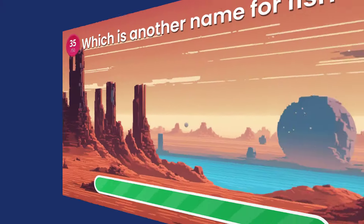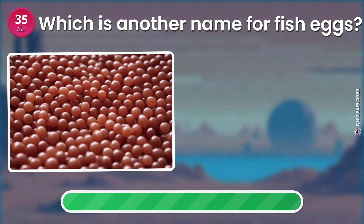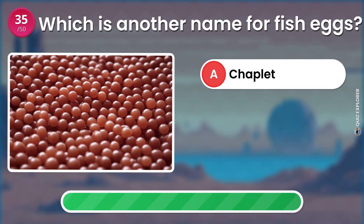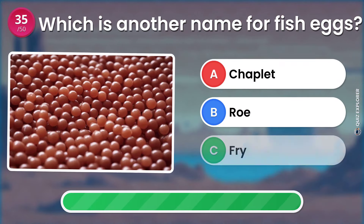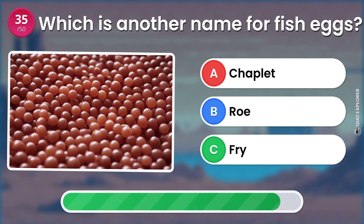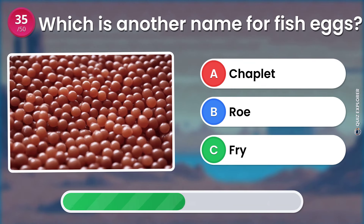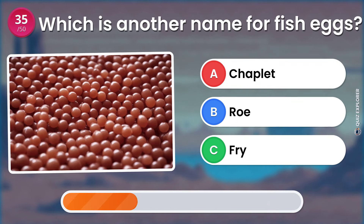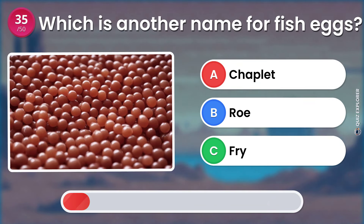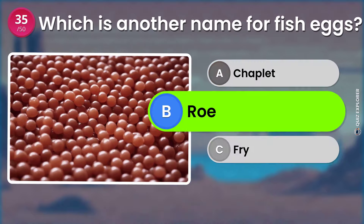Which is another name for fish eggs? Chaplet. Roe. Fry. The answer is: Roe.